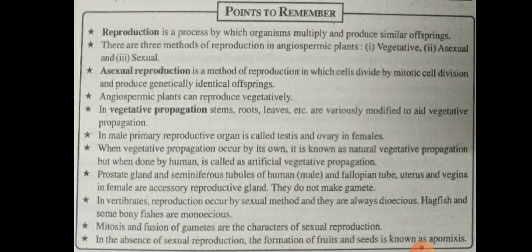Angiospermic plants can reproduce vegetatively. In vegetative propagation, stems, roots, leaves, etc. are variously modified to aid vegetative propagation.